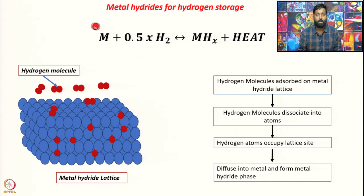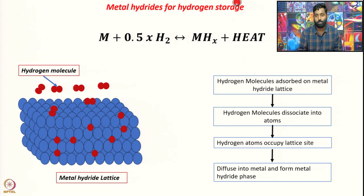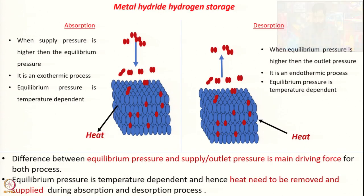After occupying a lattice site, hydrogen ultimately diffuses into the metal and forms the metal hydride phase. When metal reacts with hydrogen, it produces metal hydride and heat is also generated — this is the absorption process. There are two processes in metal hydride hydrogen storage: the first is absorption and the second is desorption.